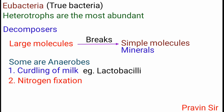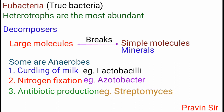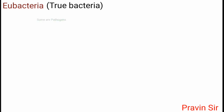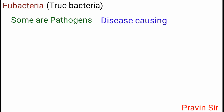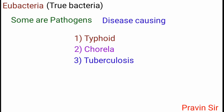Heterotrophs are the most abundant. Some are decomposers that break large molecules into simple molecules or minerals. Some are anaerobes that help in curdling of milk, such as Lactobacilli. Some perform nitrogen fixation like Azotobacter, some are involved in antibiotic production like Streptomyces, and some are pathogens — disease-causing organisms — causing diseases like typhoid, cholera, tuberculosis, and tetanus.